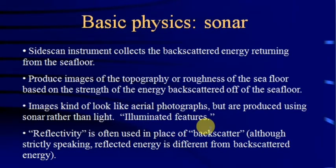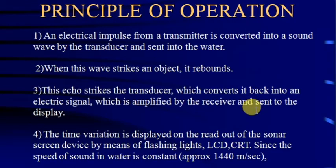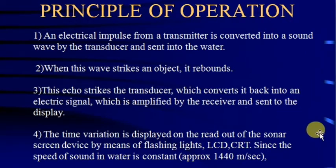The principle of operation: an electrical impulse from the transmitter is converted into sound waves by the transducer and sent into water. When this wave strikes an object — such as a submarine, a fish, or a ship — it rebounds. This echo strikes the transducer, is received, converted back into an electric signal, amplified by the receiver, and processed for display.